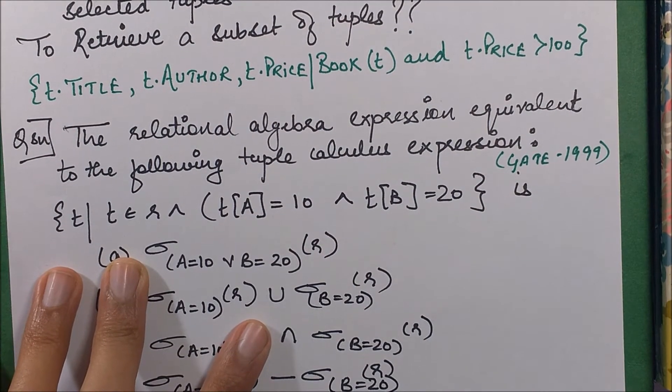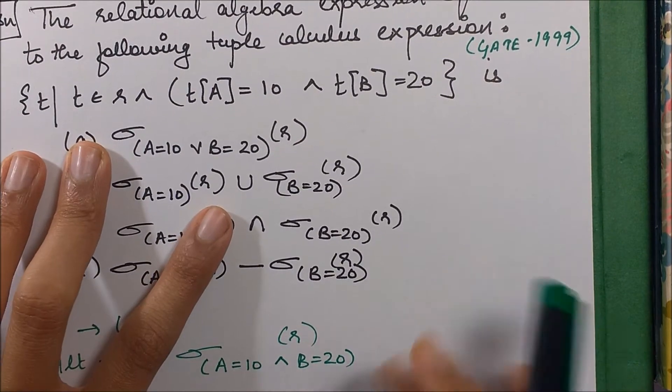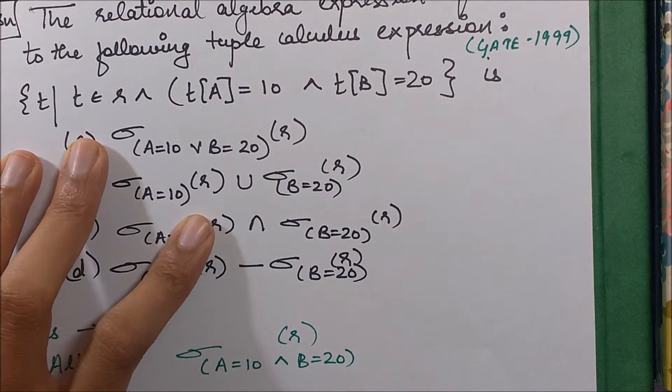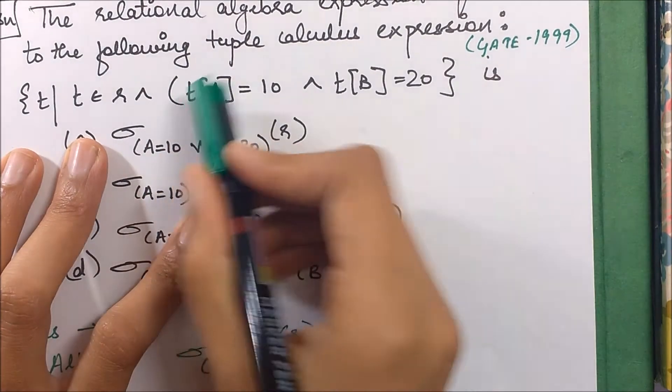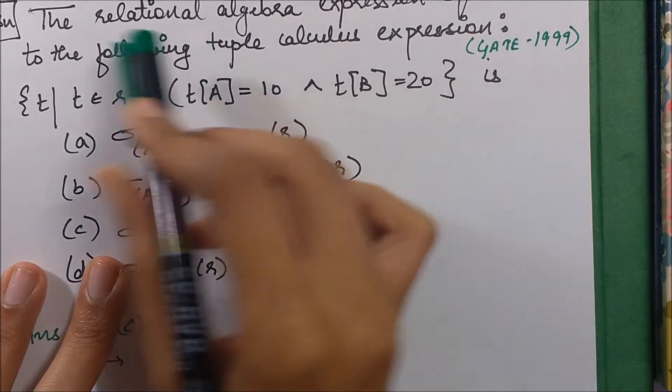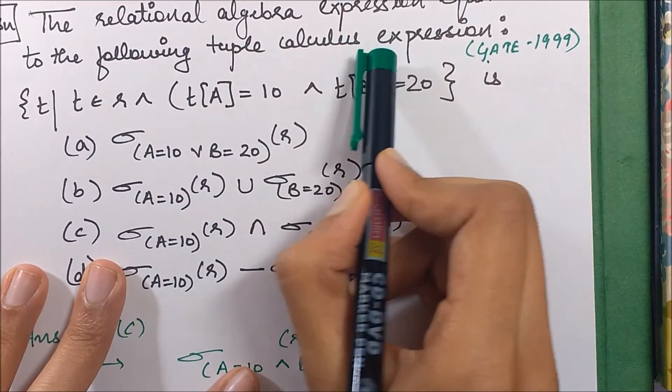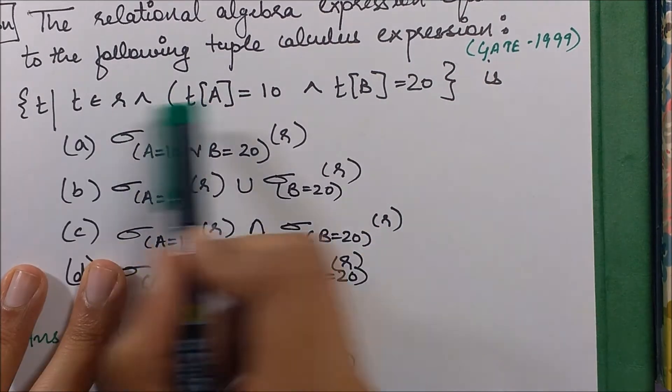Now let's take up a GATE question in the same context. This is a very simple question; I'll be taking a more complex question in the next session. This is from GATE 1999. The question is: the relational algebra expression equivalent to the following tuple calculus expression is.